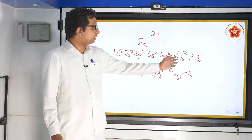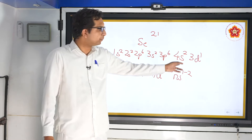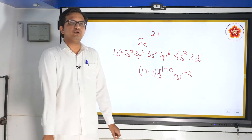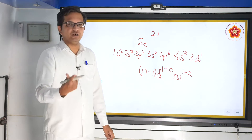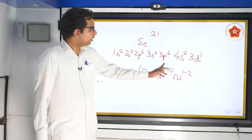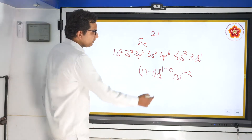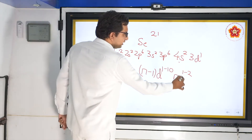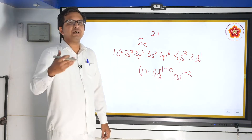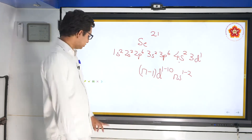Generally, we believe that the earlier orbit should be completed before going to the next one. Remembering rules from first year — Aufbau principle, Hund's rule — we know we have to complete the earlier one and move on. But then, why is ns written as 1 or 2? This indicates that there could be some exceptions. Let us see what those are.